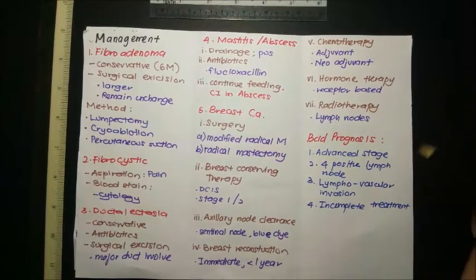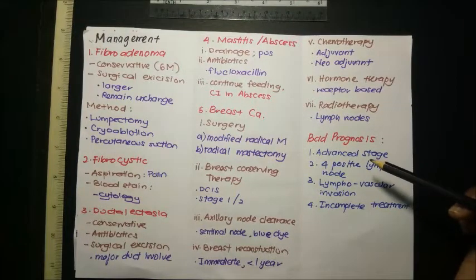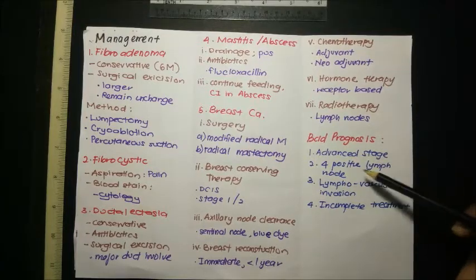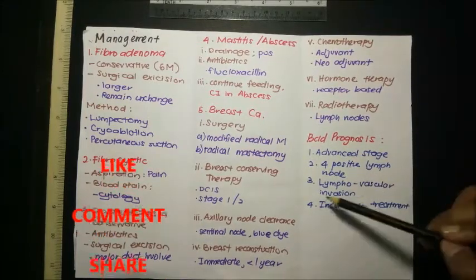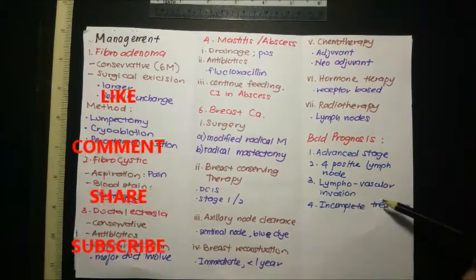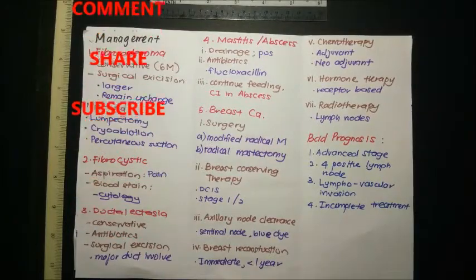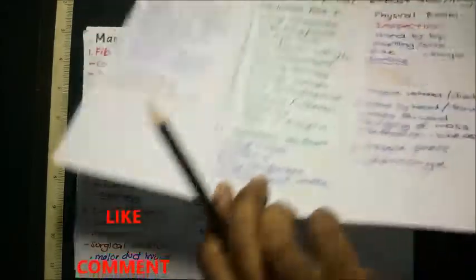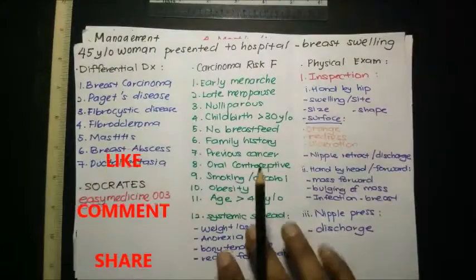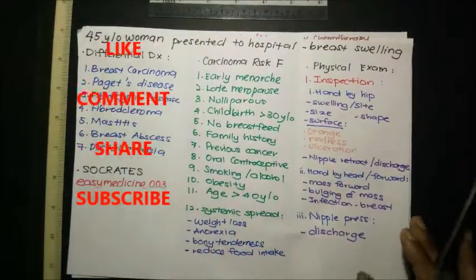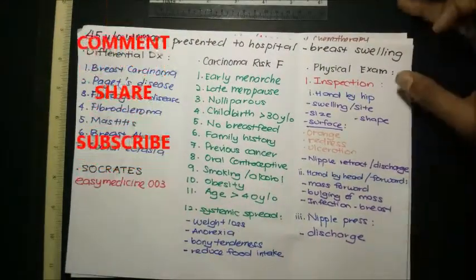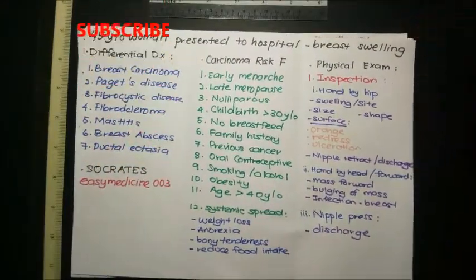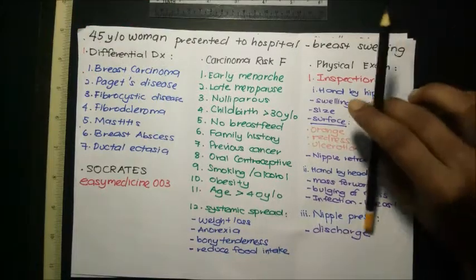Poor prognosis indicators in breast carcinoma include: stage four disease, involvement of four or more positive lymph nodes, lymphovascular invasion, and incomplete treatment. These are the key points covering breast swelling — the common history questions, investigations, and management. Thank you.